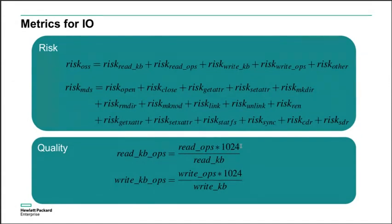For the OSS, we collect metrics like read KBs, read Ops, write KB, write Ops, and other operations. We accumulate the risk of all of them and call it risk OSS. Similarly, risk MDS is the sum of all risks for different metadata operations like open, close, links, make directory, and remove directory. These two risk metrics are pretty fundamental.